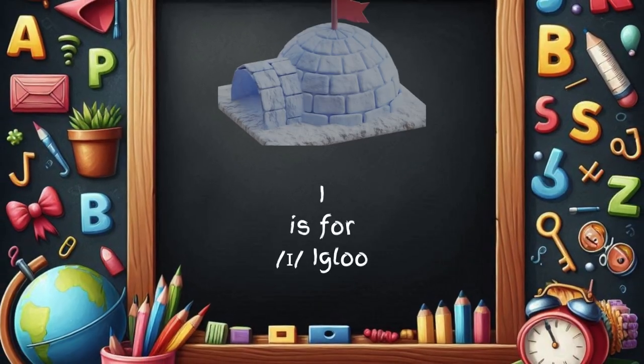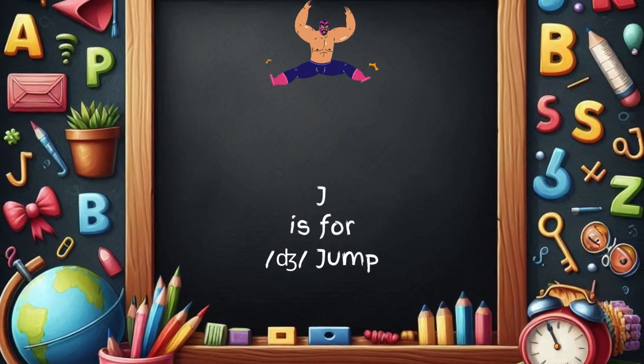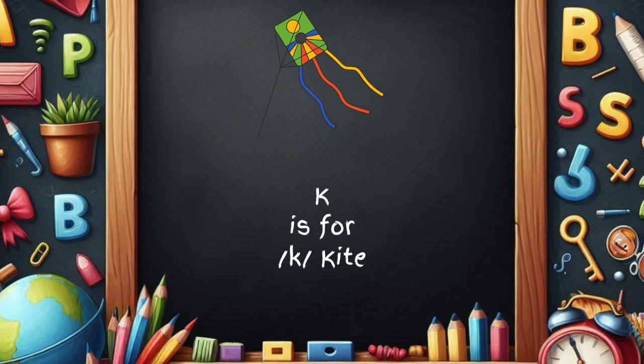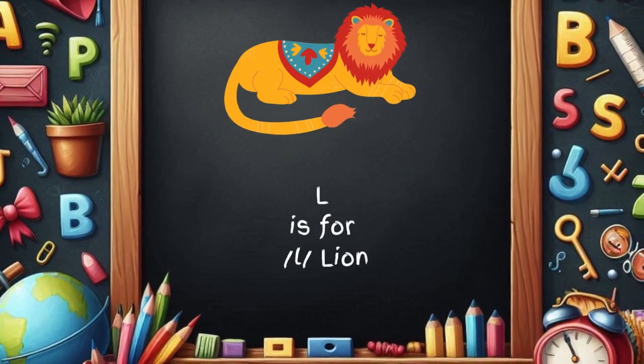I is for igloo, i-i-igloo. J is for jump, j-j-jump. K is for kite, k-k-kite. L is for lion, l-l-lion.